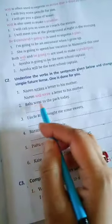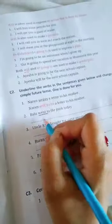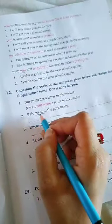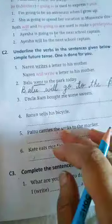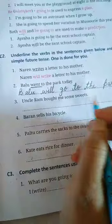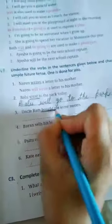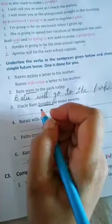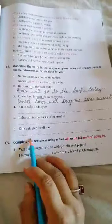Next: Baran went to the park today. What is the verb? Went. What will it become? Baran will go to the park today. Next: Uncle Ram bought me some sweets. The verb is bought. What will it become? Uncle Ram will buy me some sweets.